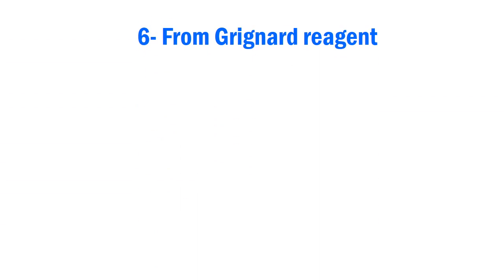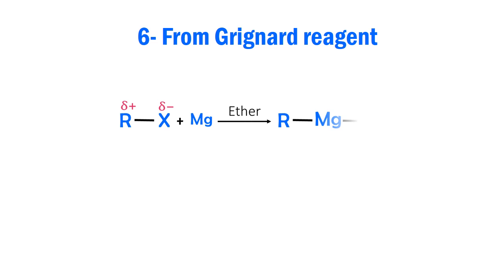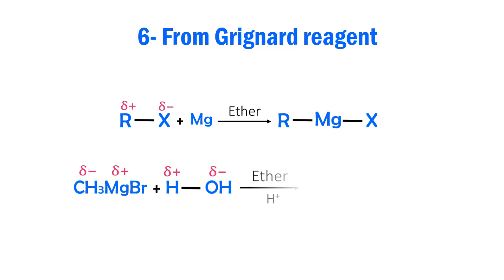Alkyl halides react in anhydrous ether with magnesium to form alkyl magnesium halides, known as Grignard reagent. These decompose on treatment with water or dilute acid to give alkanes.